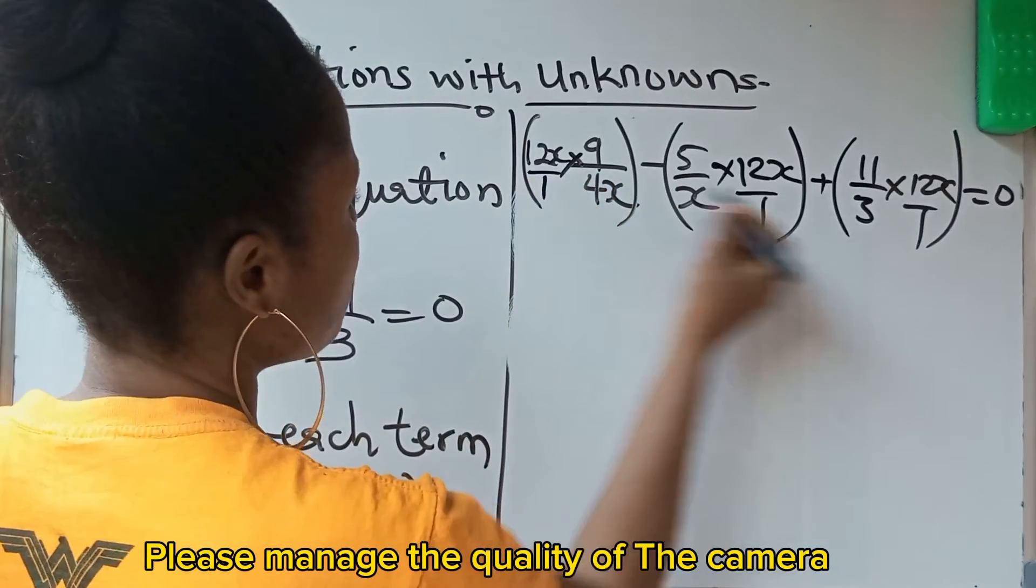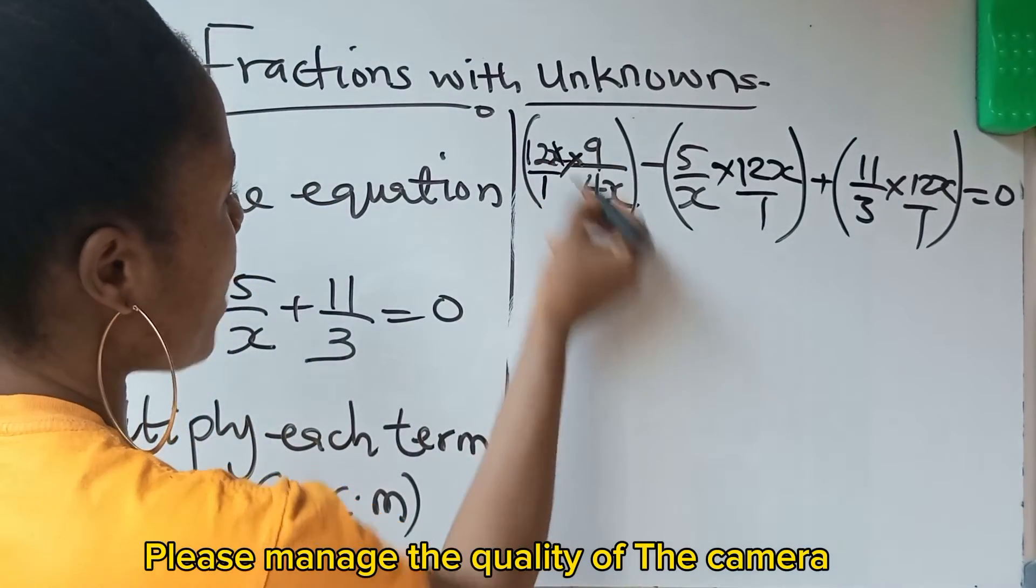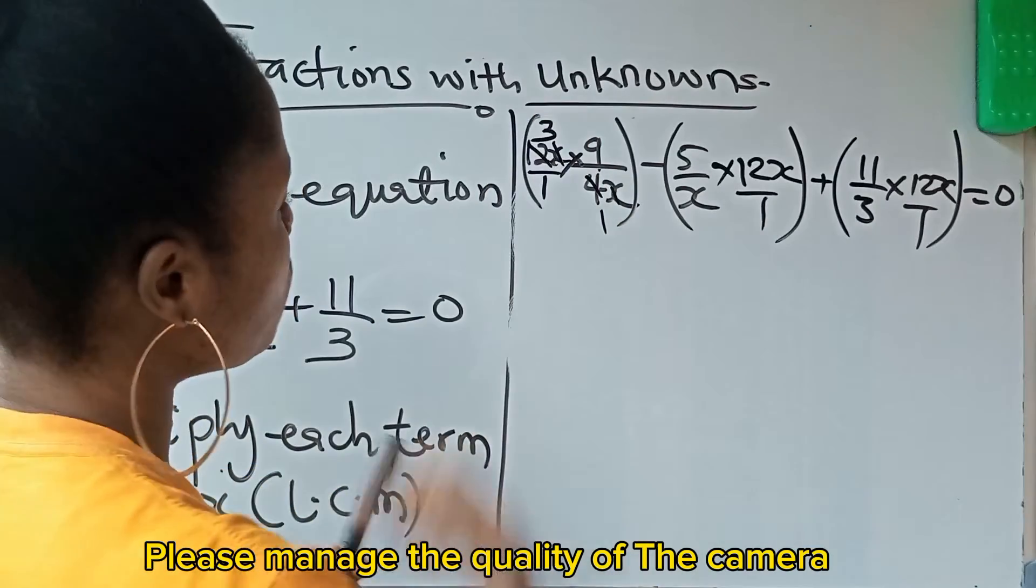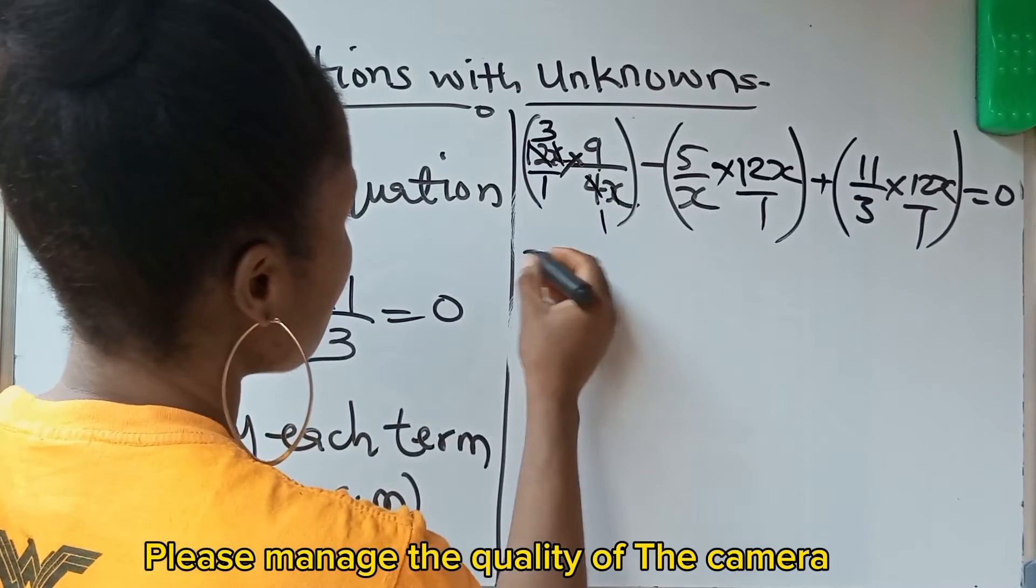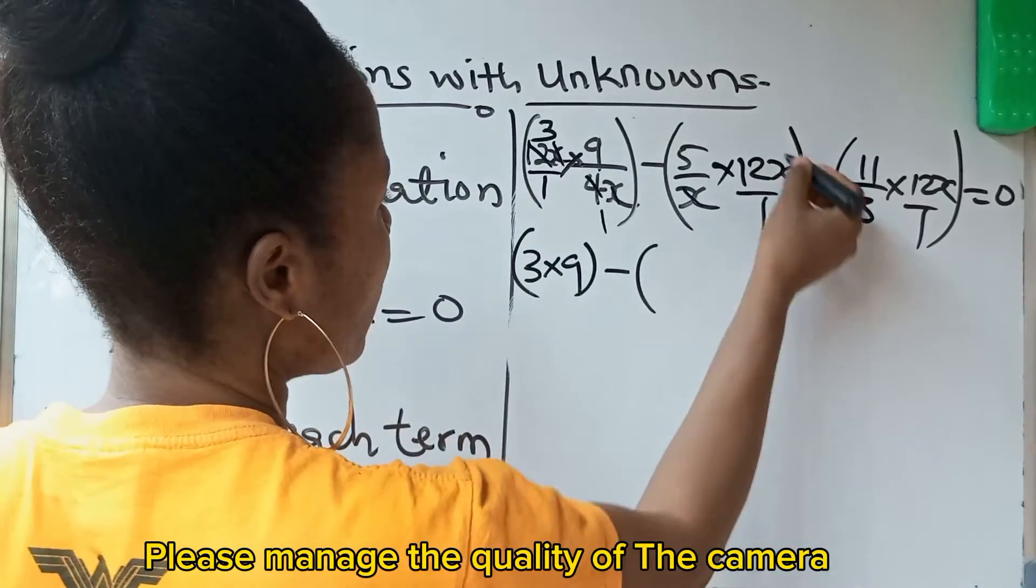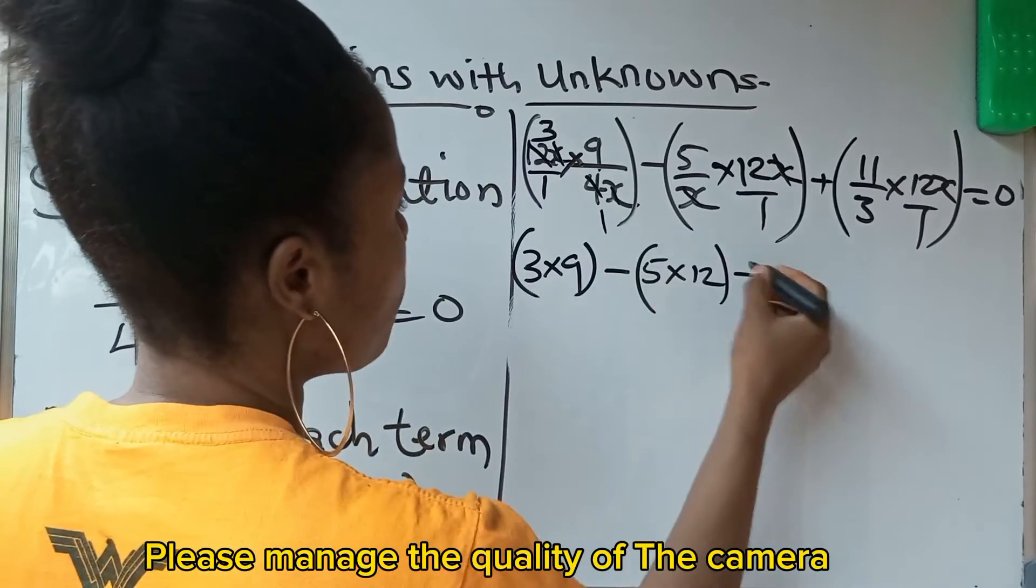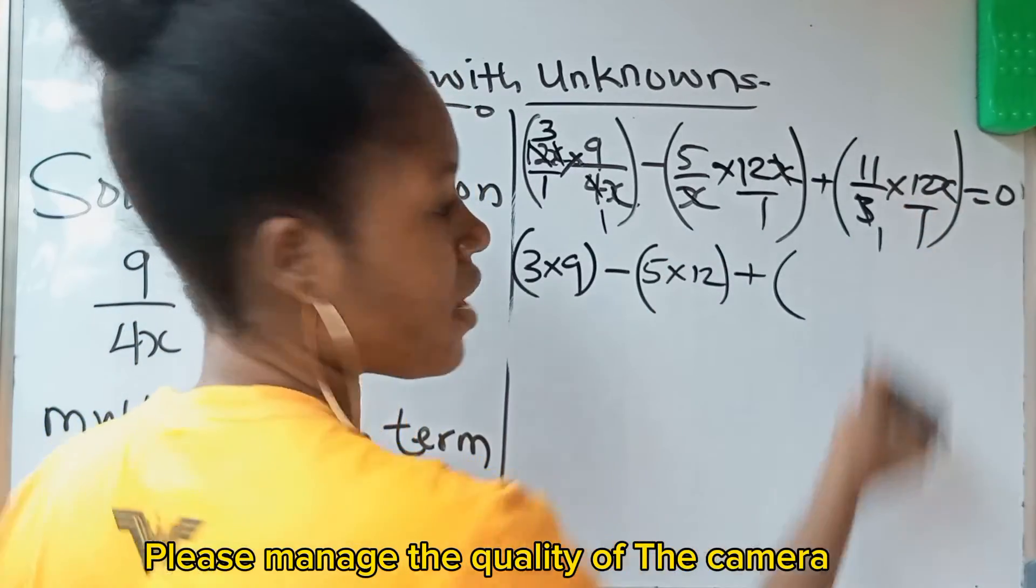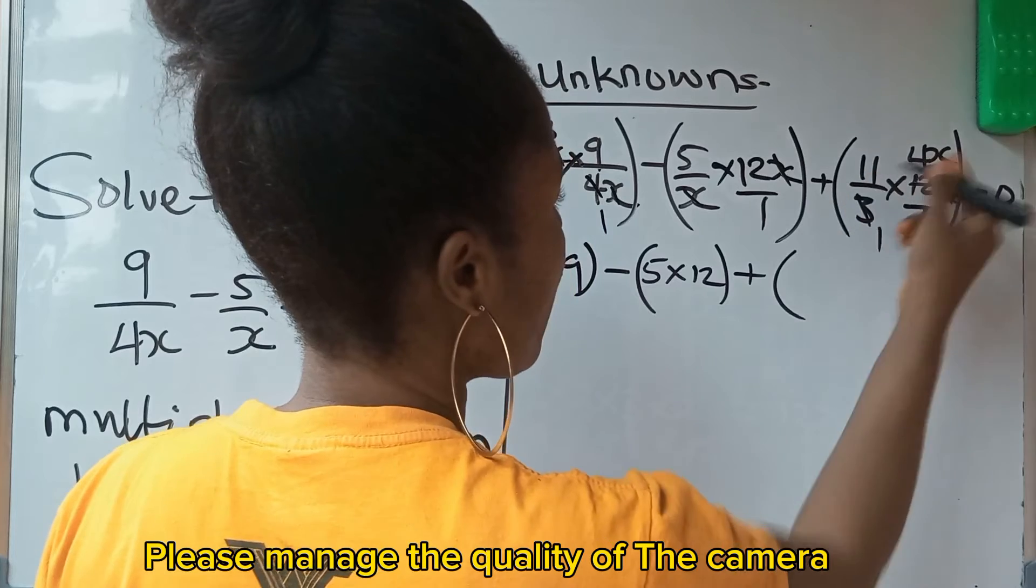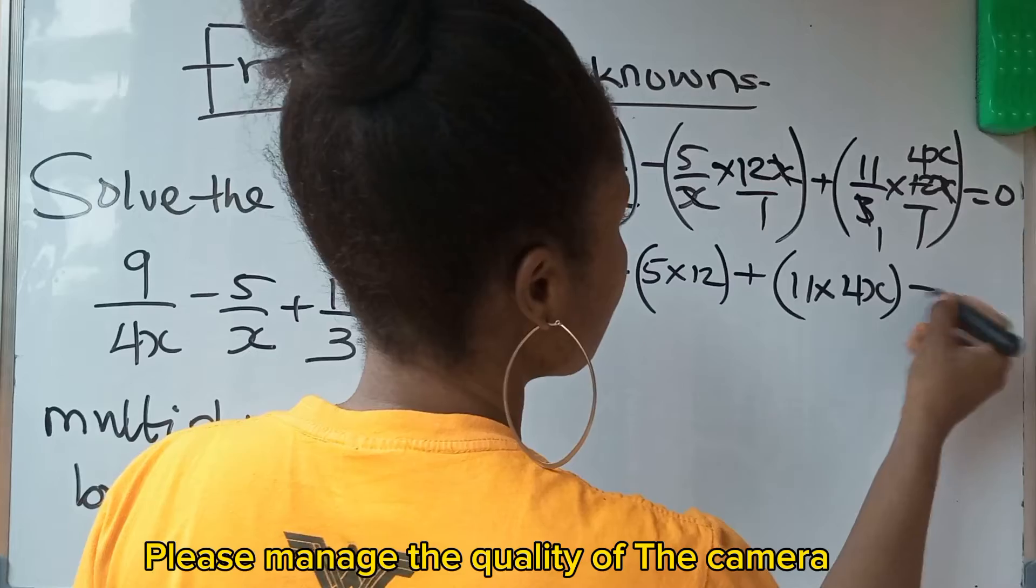So what do we do now? These 12x, you can bring them down as 12x over 1. Now, x, we cancel x here. 4 divides itself 1, divides 12, you are going to have 3. That means we have in these brackets 3 times 9. Minus, for this one, x cancels x, so you are left with 5 times 12. Plus, for this side now, 3 divides itself, gives us 1, divides 12, you have 4, divides x, you have x. So we are left with 11 times 4x equals 0.